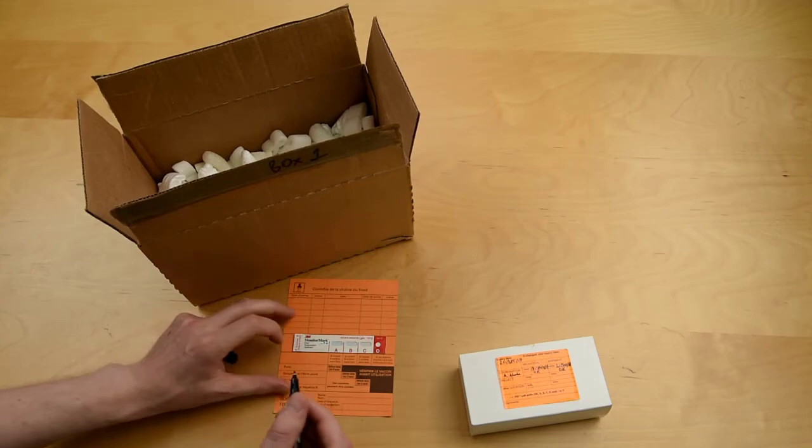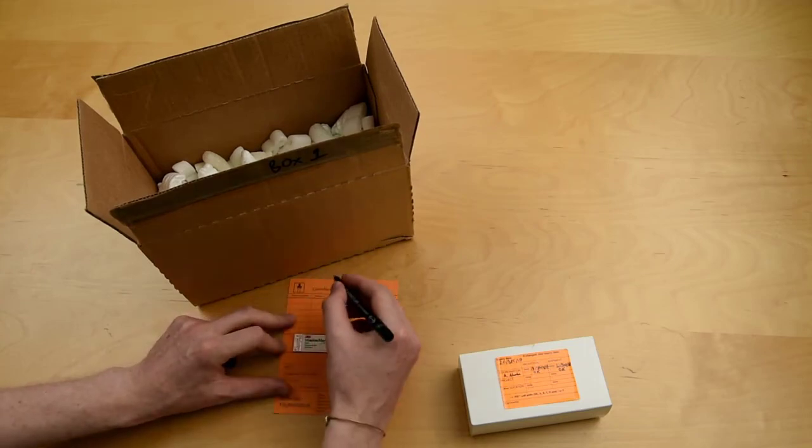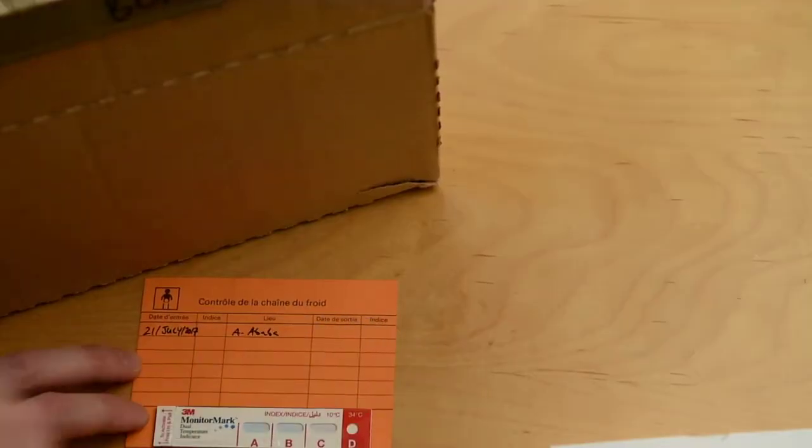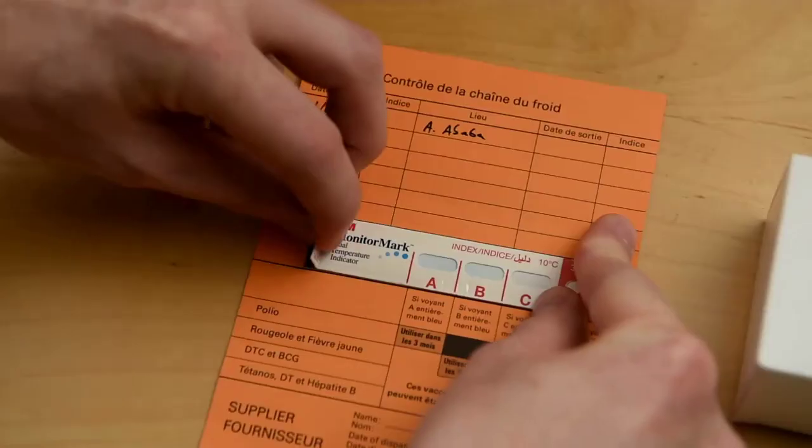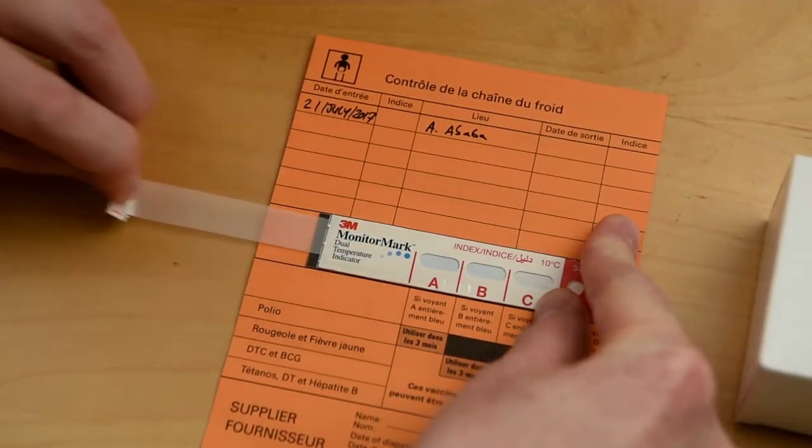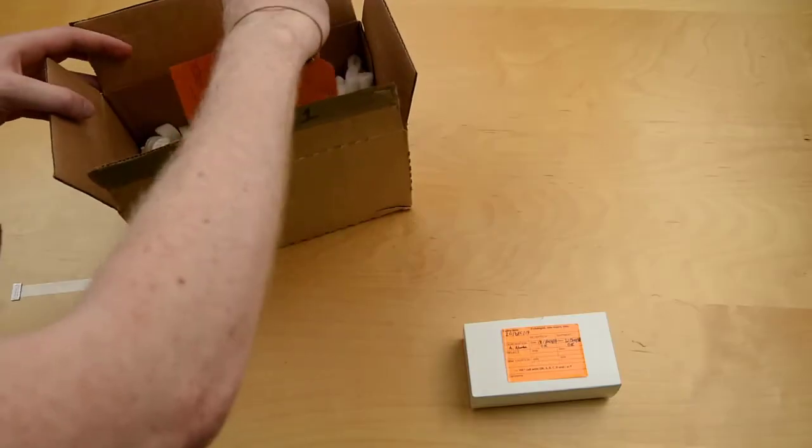We write the date of activation of the 3M card and the location, activating it by pulling the tab on the left, and putting it in the box close to the cold chain item being shipped.